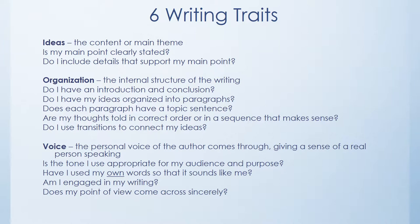So here are the six traits of writing. If the first feature of a good reader is that they're able to comprehend what they're reading, then the first trait of a good writer is that they're able to clearly state their ideas. If the idea isn't clearly stated, the reader won't be able to understand. A couple of questions to consider: Is my main point clearly stated? Do I include details that support my main point?